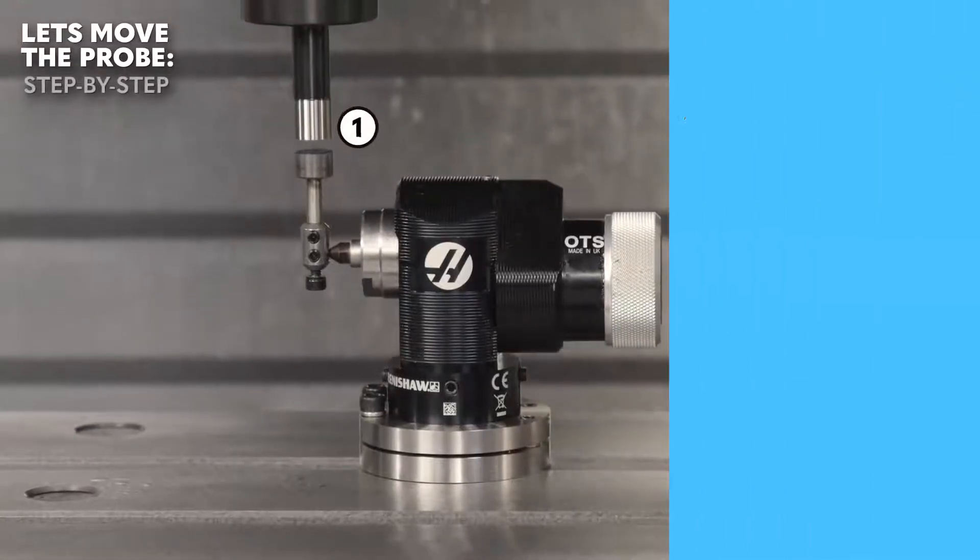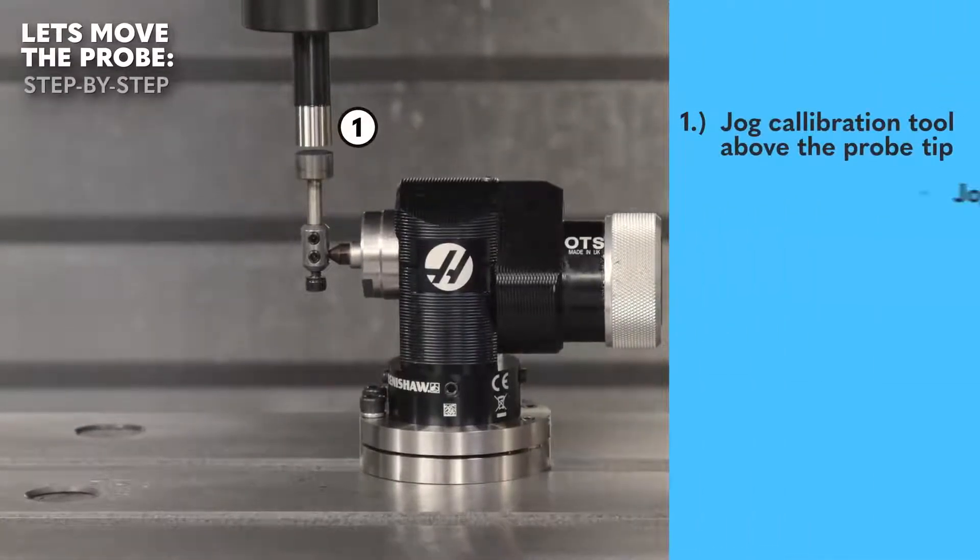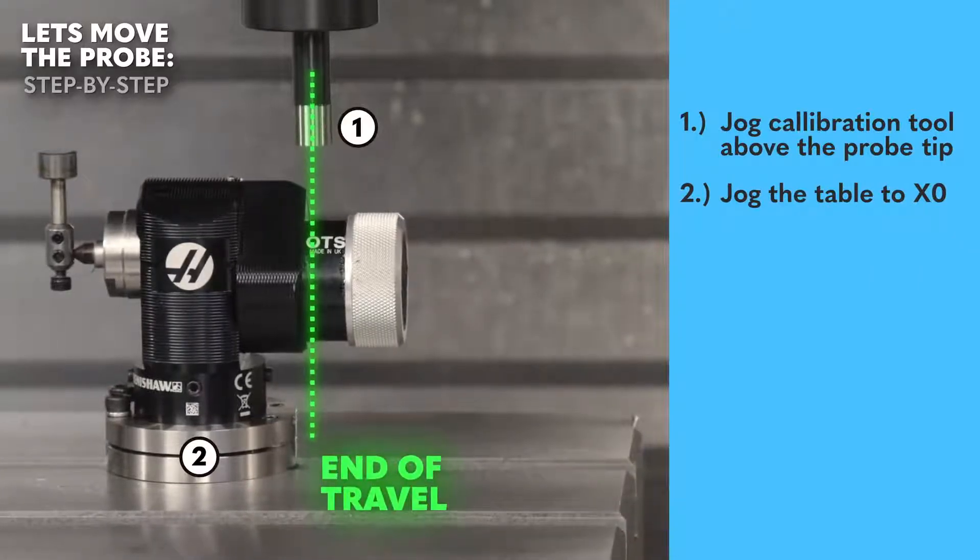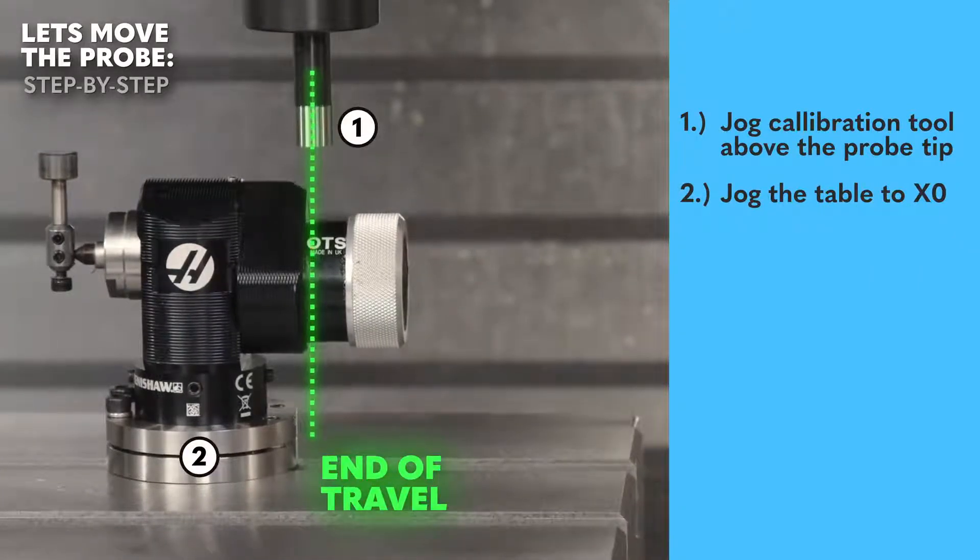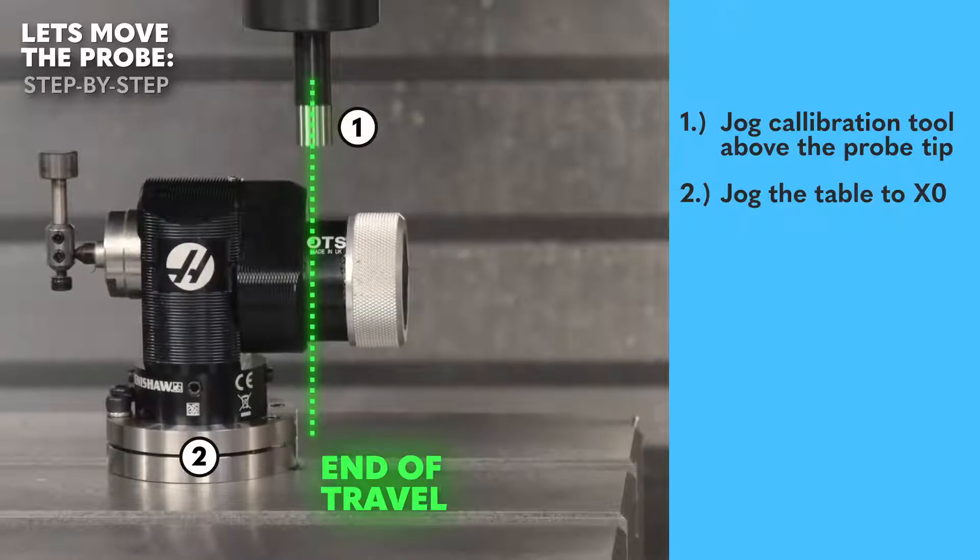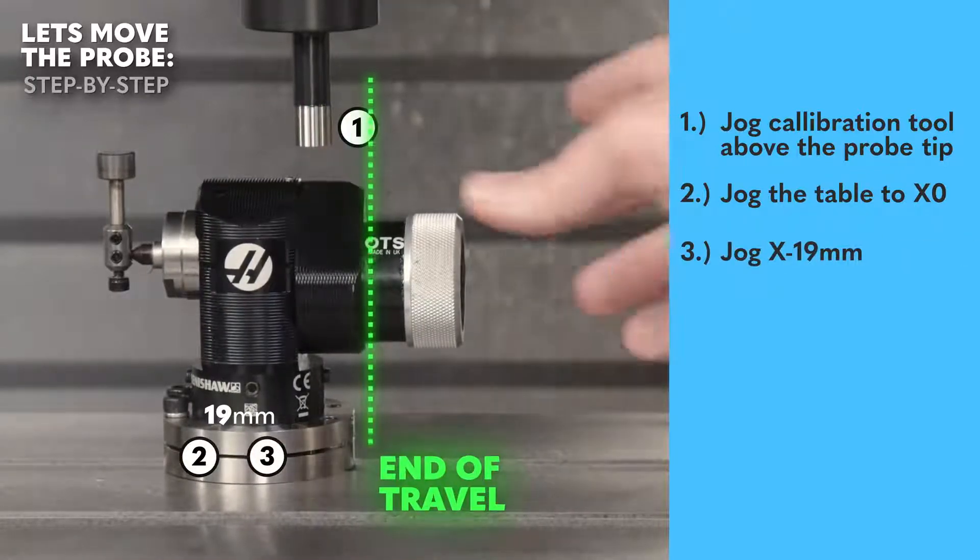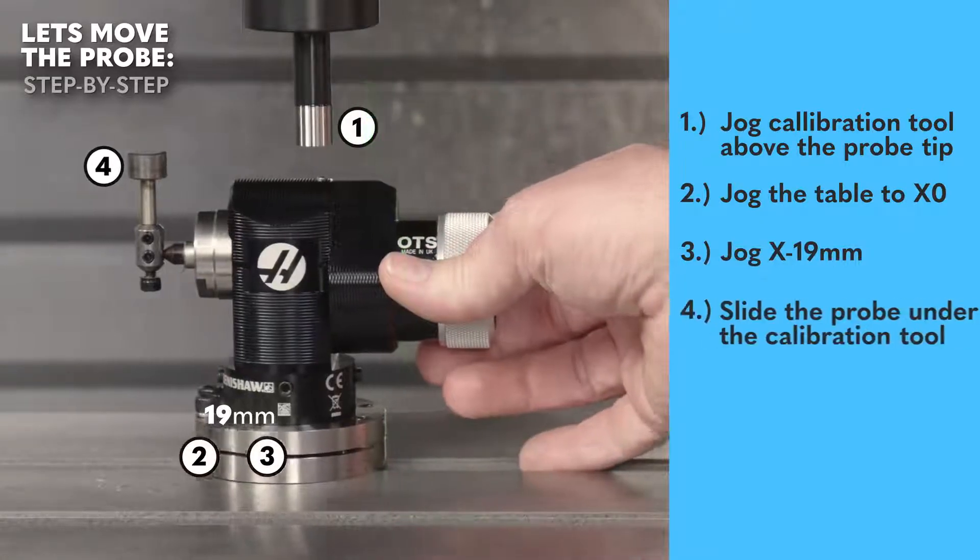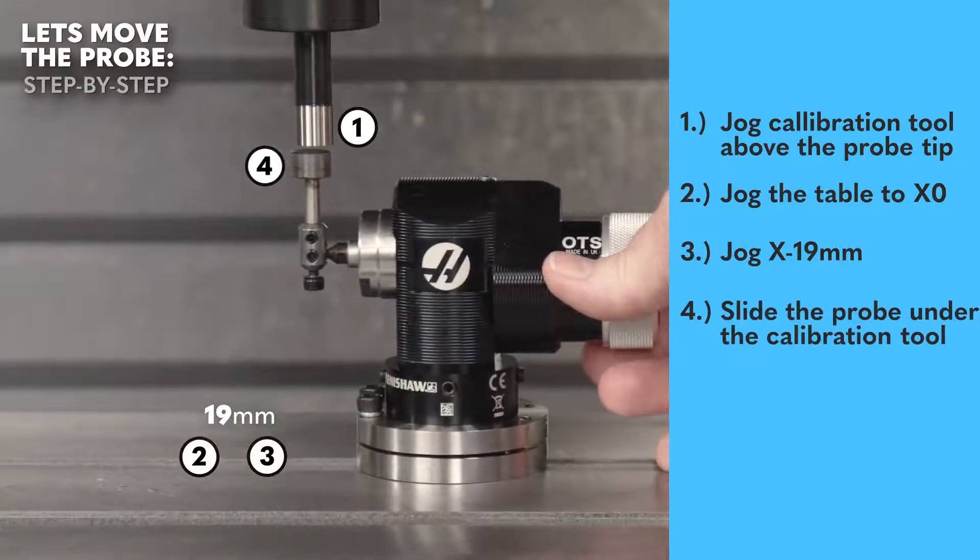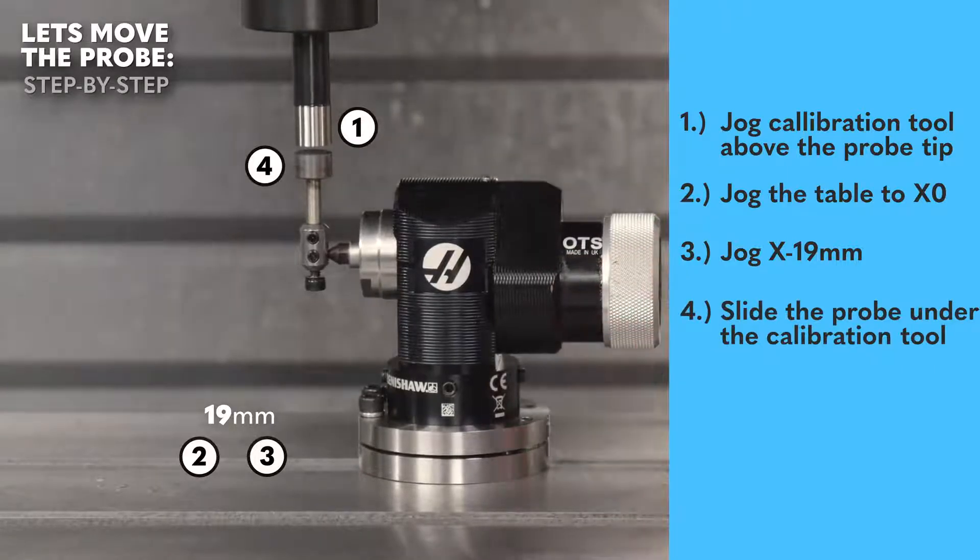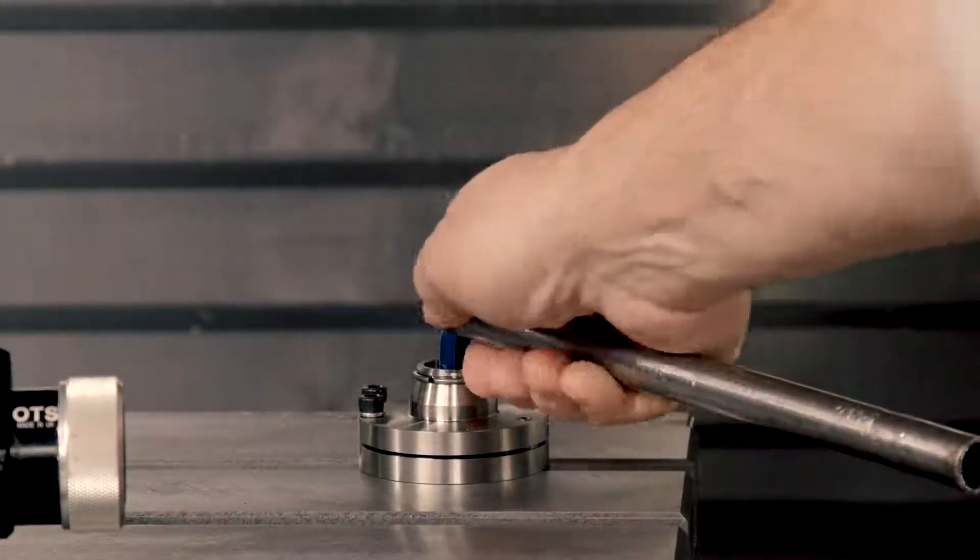We'll take our calibration tool and jog it down above the probe tip. We'll then jog it all the way to our machine zero, X zero. Once there, we're gonna jog it back to the right side by 19 millimeters or three quarters of an inch, 0.75 inches. Once there, we slide our tool probe right underneath our calibration tool till things line up. And that's where it's gonna live. So we jog our calibration tool all the way. We bolt everything back together with those set screws.